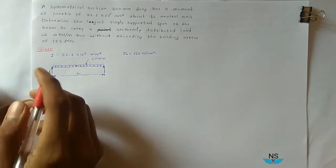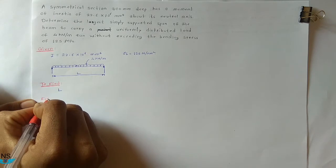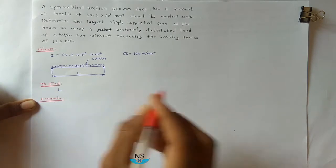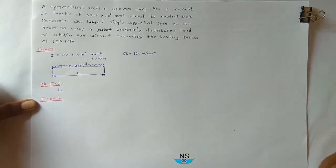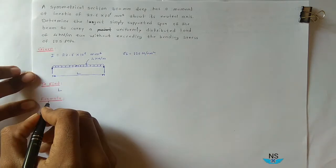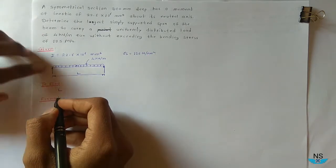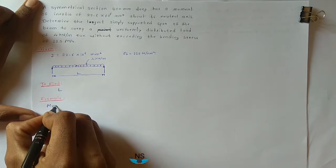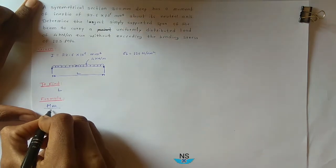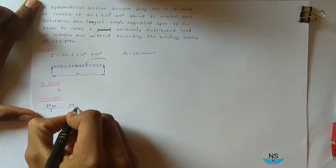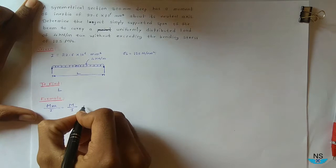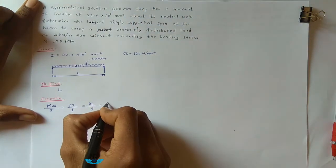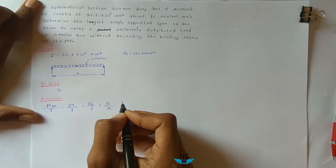Now for the formula: since bending stress is given, we use the bending stress formula. M/I = σ_B/Y = E/R.